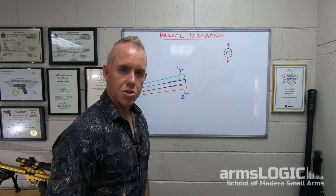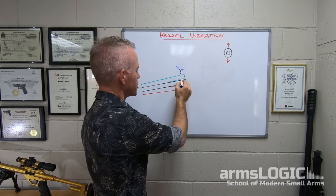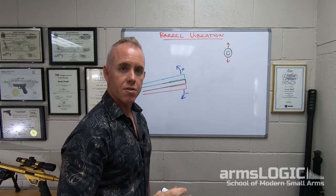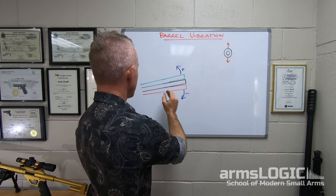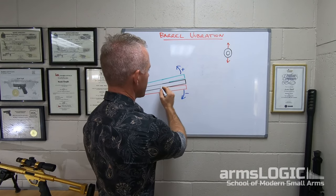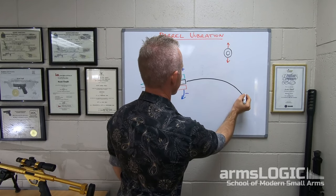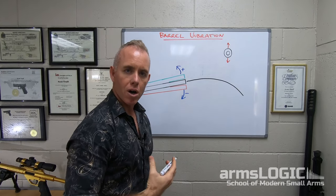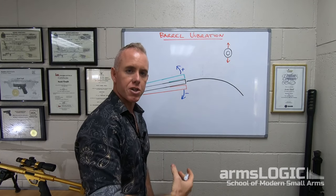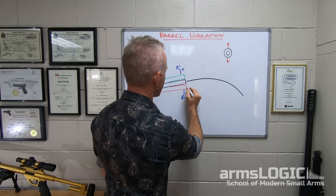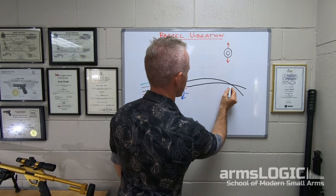Now let's have a look at what happens to projectiles that exit the muzzle during positive vibration — the upwards travel of the muzzle — keeping in mind that there is nearly always a variation in velocity between projectiles from shot to shot. If a projectile of average velocity exits the barrel at the mid plane point, we could have a trajectory like this. A projectile of higher velocity would exit the barrel sooner due to its high velocity, but because of that extra speed it would have a flatter trajectory, and it would intersect the trajectory of the first projectile here.